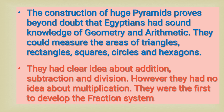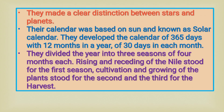They could measure the areas of triangles, rectangles, squares, circles and hexagons. They had clear ideas about addition, subtraction and division. However, they had no idea about multiplication. They were the first to develop the fraction system. They made a clear distinction between stars and planets. Their calendar was based on the sun and known as the solar calendar. They developed a calendar of 365 days with 12 months in a year of 30 days each.